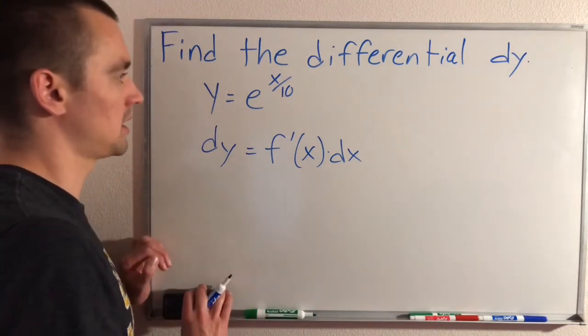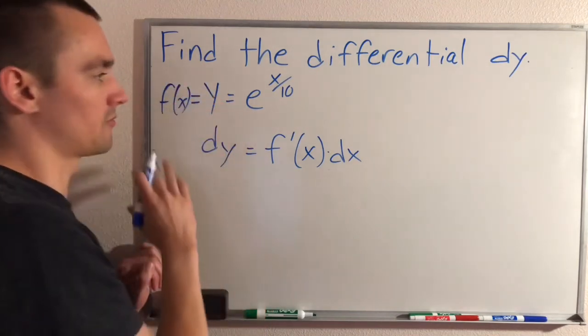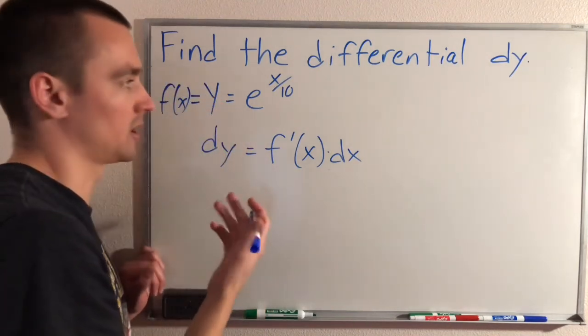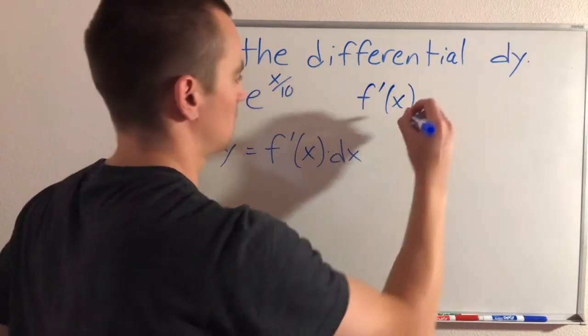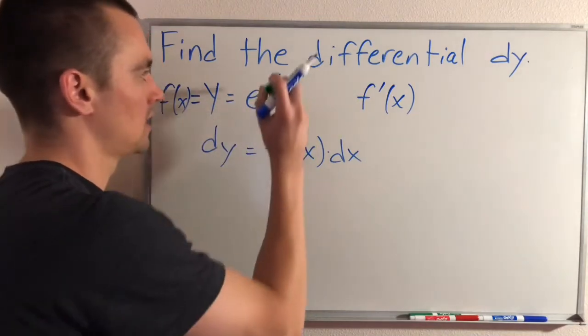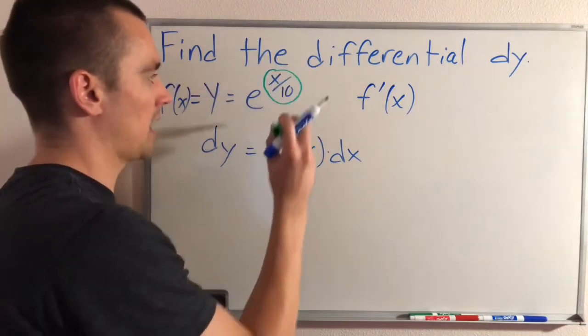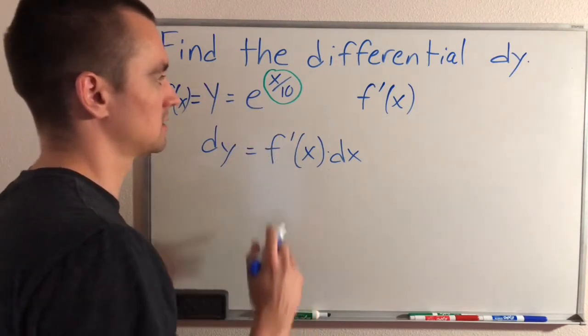really the piece that we actually need to do some work to find is f prime of x. So let's just say that this function is our f of x. This is the function whose differential we're trying to find. So basically we just need to find f prime of x, which would just use the chain rule. We could think about having an inside function, which is this power, and our outside function would be like e to the x. So using chain rule,